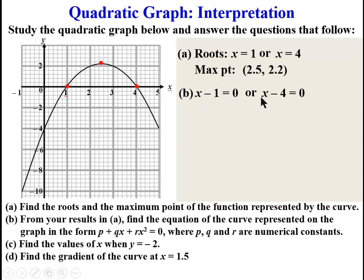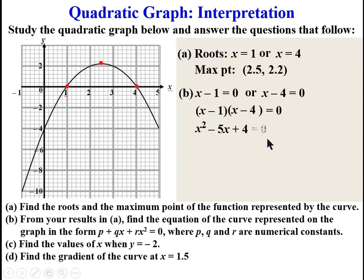Since the two factors are equal to 0, their product will be equal to 0. So we have (X minus 1)(X minus 4) equal to 0. Expanding this, we have X squared minus 5X plus 4 equal to 0. Since the curve has a maximum point, we are going to multiply the equation by negative 1. If it has a minimum point, we leave it like this, but since it has a maximum point, we multiply by negative 1.